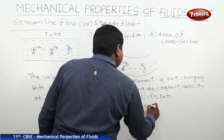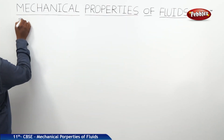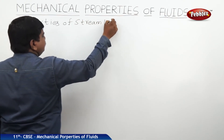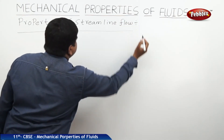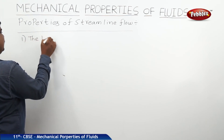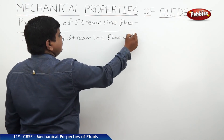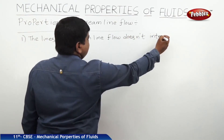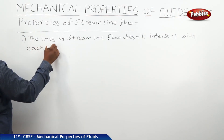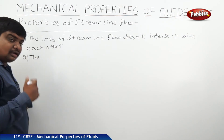The properties of streamline flow or steady flow. The first property: the lines of streamline flow do not intersect with each other. The second property: the streamlines are crowded when the velocity is more.